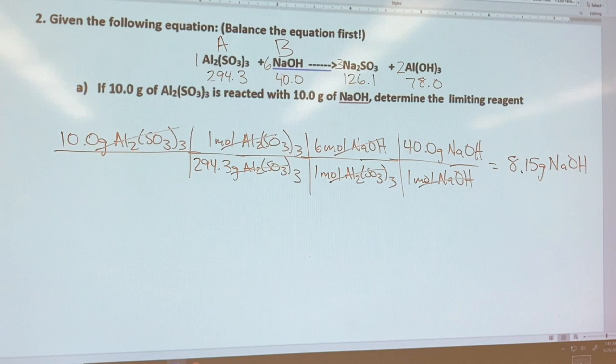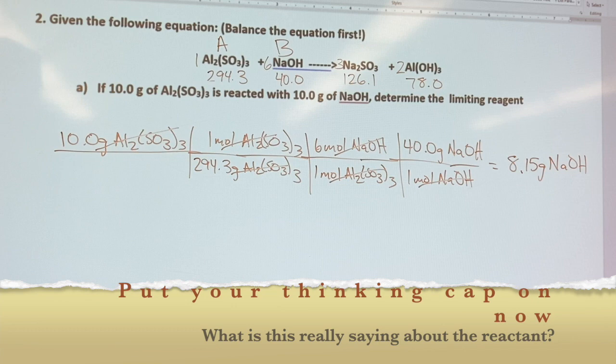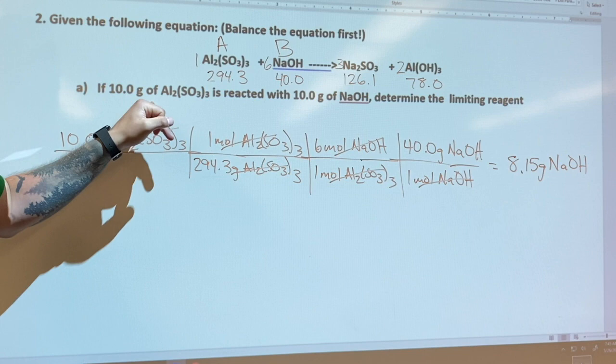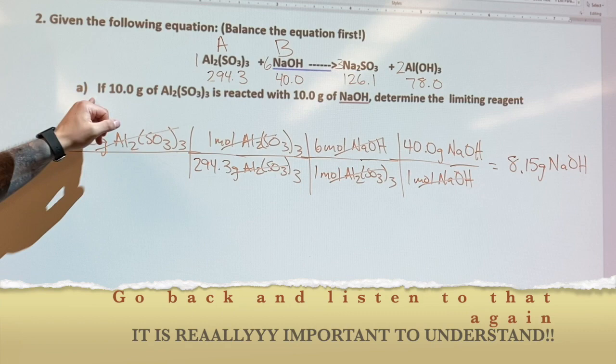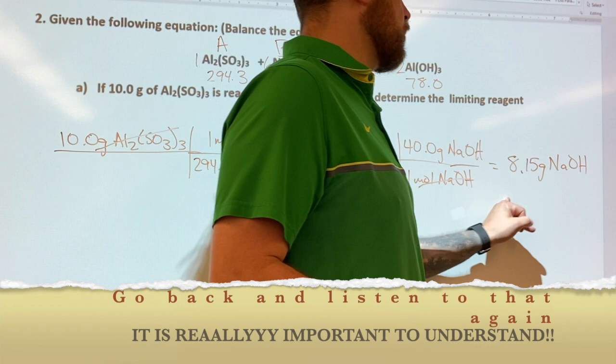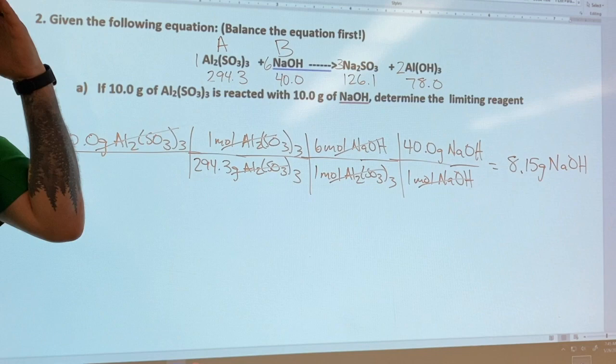Like I told you before, this is the method that requires a little bit more thinking. So this is where I have to go, okay, what does this say? This is saying, and I want to make sure everybody understands this, that if I'm going to use up all 10.0 grams of Al₂(SO₄)₃, I'm going to use up all of that 100%. This is telling me how much NaOH I am going to need. So in order to use up all 10 grams of this, I am going to need 8.15 grams of NaOH.